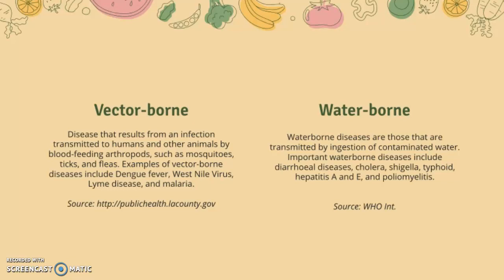Vector-borne diseases are diseases that result from an infection transmitted to humans and other animals by blood-feeding arthropods — mosquitoes, ticks, and fleas. Examples include dengue, West Nile virus, Lyme disease, and malaria. Waterborne diseases are those transmitted by ingestion of contaminated water. Important diseases include diarrheal diseases, cholera, shigella, typhoid, hepatitis A, and poliomyelitis.